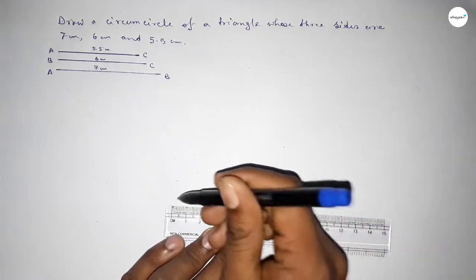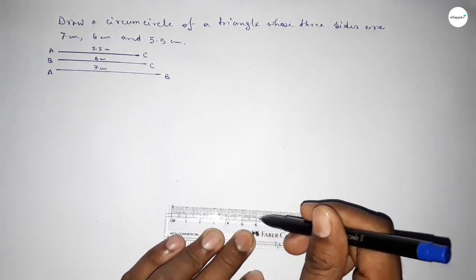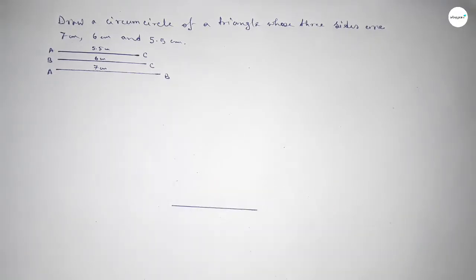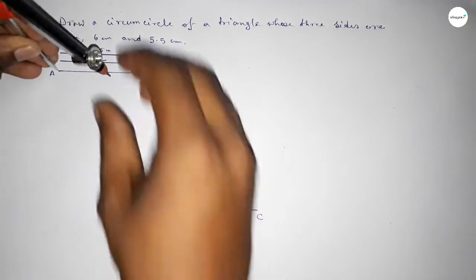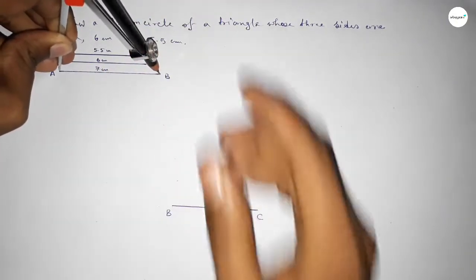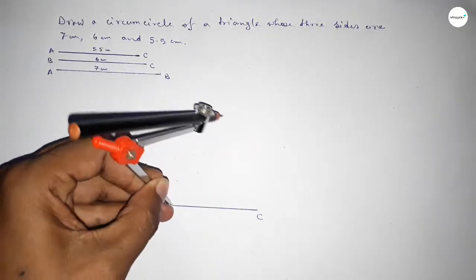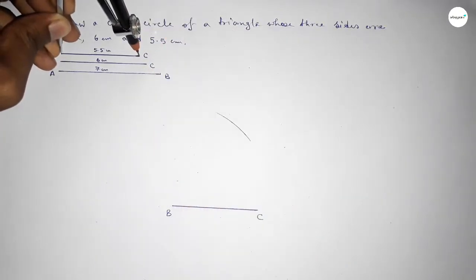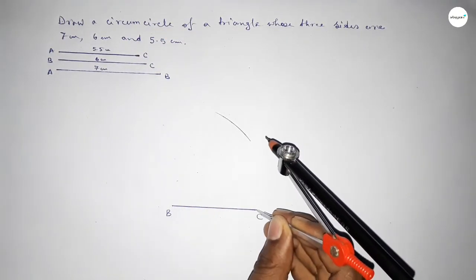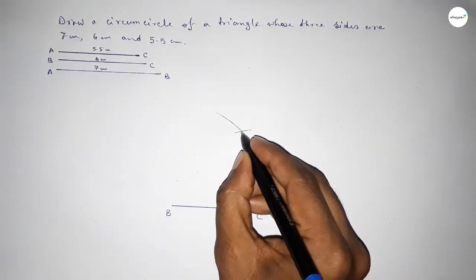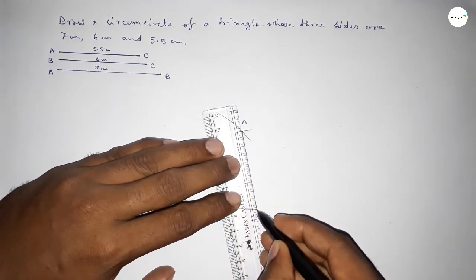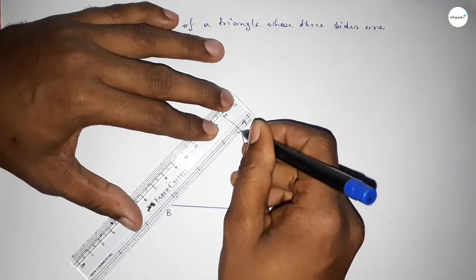Now first we have to draw a line of length 6 centimeter for line BC, taking here B point and here C point. Next, taking the length AB of 7 centimeter by using compass, putting the compass on point B and point C and cutting an arc. Both curves intersect at point A. Now joining AC and joining side AB, so we got triangle ABC.